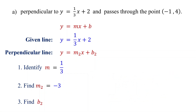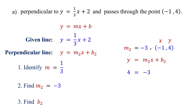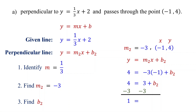The next step is to find the y-intercept of the perpendicular line. To do this, use its slope and the given point. Since the perpendicular line passes through this point, the point's coordinates satisfy the equation y equals m2x plus b2, so we can substitute them for x and y into the equation. Replace y with 4, m2 with negative 3, and x with negative 1. Now solve for b2. Negative 3 times negative 1 is positive 3. Then subtract 3 from both sides to isolate b2. On the left, we get 1. On the right, these cancel, leaving b2. Therefore, b2 equals 1.